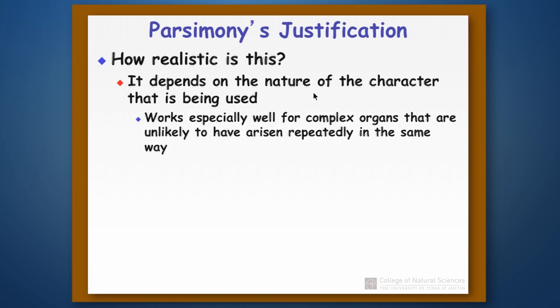And the reason is that the complex organs are unlikely to evolve exactly the same way twice because of their complexity. And so if two things appear the same way in a complex organ, again like the eye, then there's a pretty good chance that parsimony is the right answer to that.